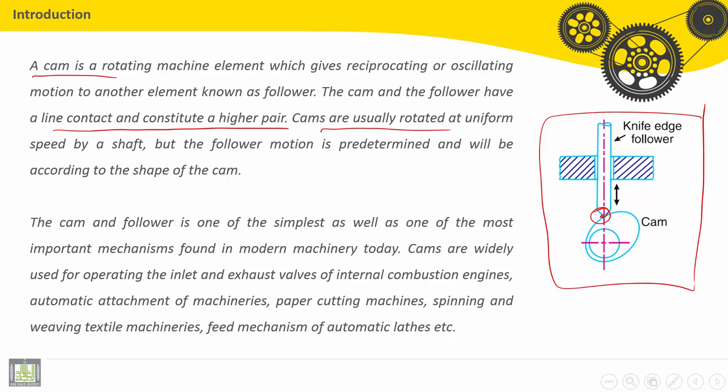Cams are usually rotated at uniform speed by a shaft, but the follower motion is predetermined and will be according to the shape of the cam. The cam and follower is one of the simplest as well as one of the most important mechanisms found in modern machinery today.